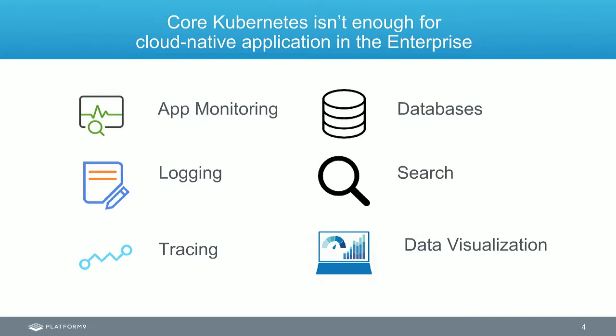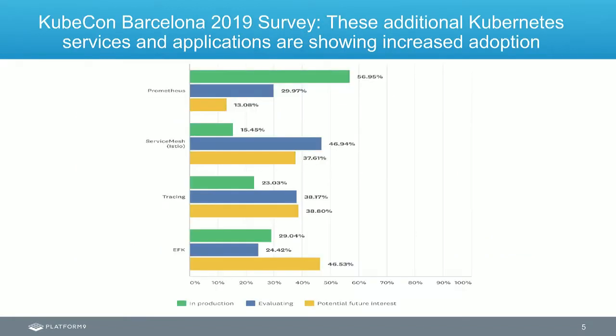At distributed scale, you need to search through logs, visualize data, and see how it's all working. Traditional monitoring tools you probably have may not be suitable for the distributed scale of microservices you're deploying. As a result, a lot of tools are now emerging in the CNCF community. We were at KubeCon Barcelona recently and surveyed over 500 participants about what additional Kubernetes tools and services they use in addition to core Kubernetes.